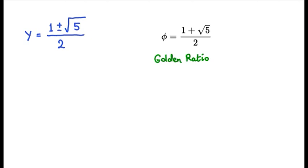This is also known as the golden ratio. Since y equals 2 to the power of x squared must remain positive for real solutions, we take only the positive root: y equals 1 plus square root of 5 over 2. The negative option, 1 minus square root of 5, would be negative and is therefore rejected.